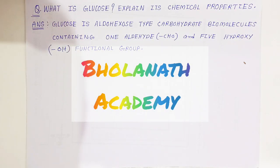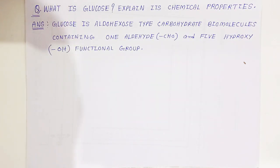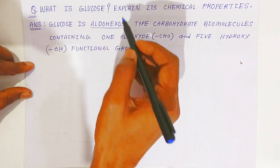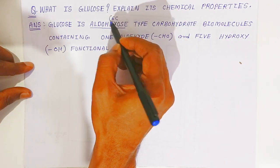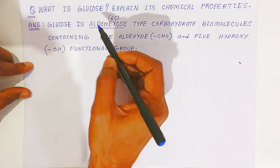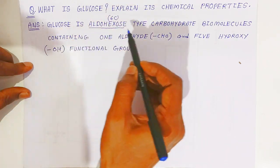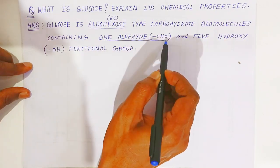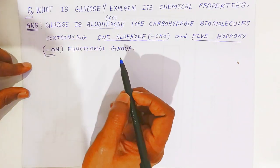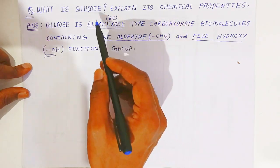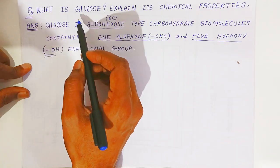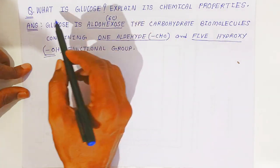Welcome to Bhutanath Academy. In this video we are going to see the question: what is glucose and explain its chemical properties. Glucose is an aldohexose — hexose means it contains six carbons, and it also contains an aldehyde group, so glucose is an aldohexose type carbohydrate biomolecule. It has two functional groups: one aldehyde and five hydroxyl groups, and because of these it has many chemical properties.